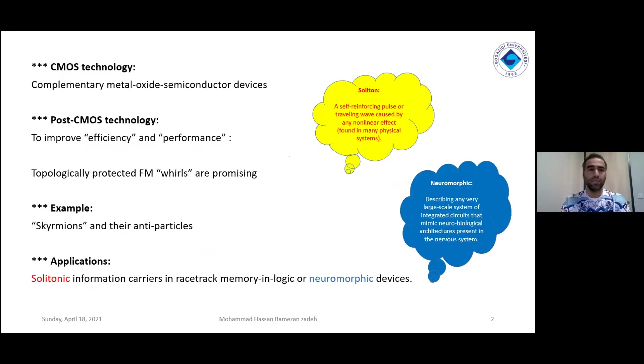Currently we are using CMOS technology, complementary metal oxide semiconductor devices, and to improve efficiency and performance we are changing the way towards topologically protected ferromagnetic structures, which are promising. One example is the skyrmions and the anti-particles. Applications are such as solitonic information carriers in the race track memory and logic for neuromorphic devices.